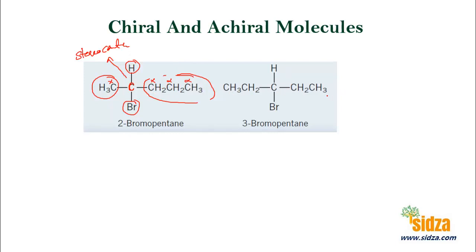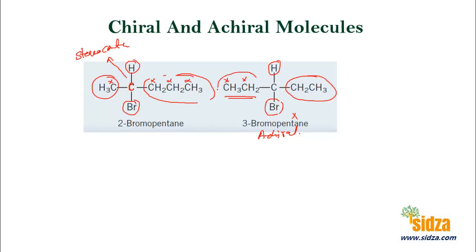Look at another molecule — 2-bromopentane. The first carbon is not chiral, the second carbon is not chiral. What about the third carbon — is it chiral? Hydrogen, bromine — different. Ethyl group — different. But here again is an ethyl group — the same. So this molecule is not chiral, it is again an achiral molecule, because it has two similar groups — the ethyl groups. So none of the carbons are chiral centers, and the molecule is not chiral.